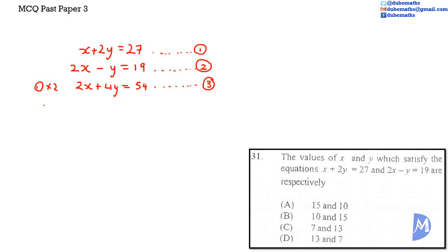Subtracting equation 3 from equation 2 gives 2X subtract 2X is equal to 0. Negative Y subtract 4Y is equal to negative 5Y. And 19 subtract 54 is equal to negative 35.